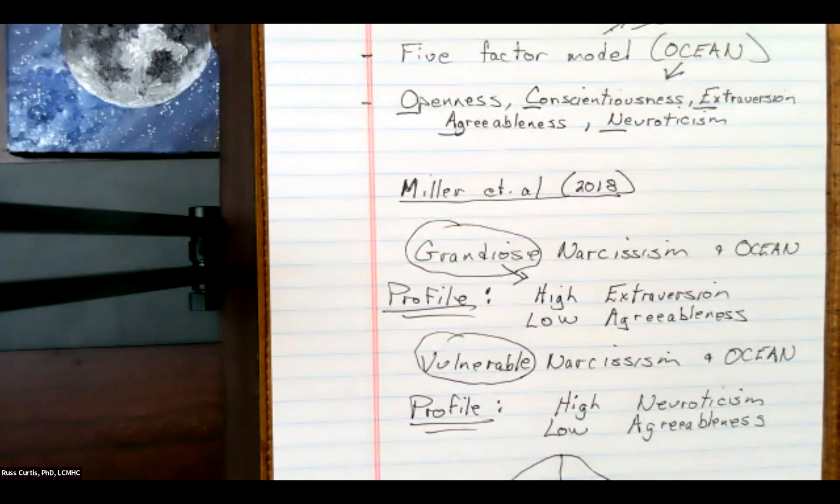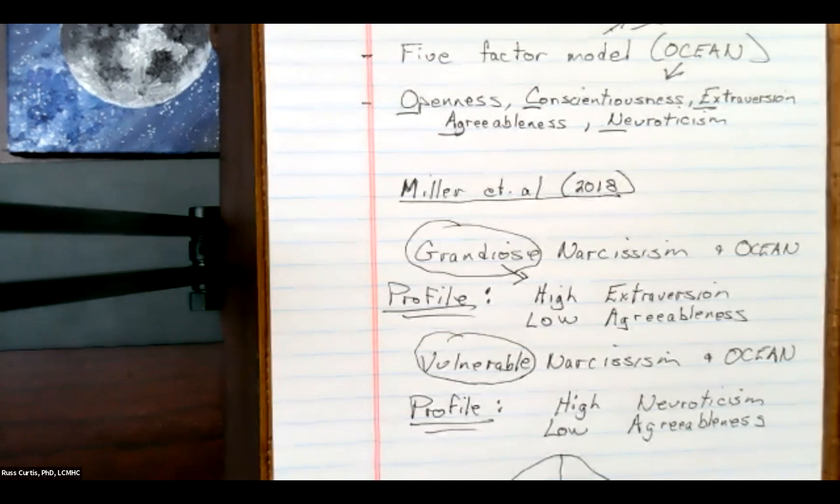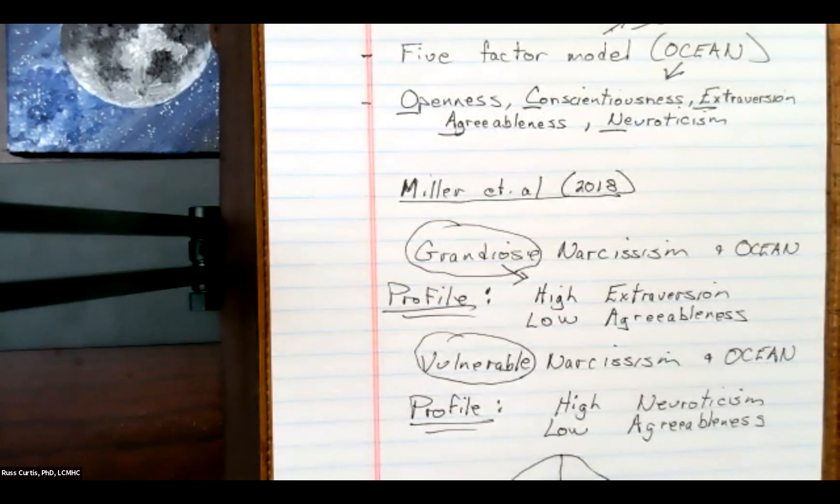2018, talked about grandiose when they were actually measuring narcissism. So giving folks who experienced this test to figure out where they score. Grandiose narcissism using the ocean, or the five-factor model,